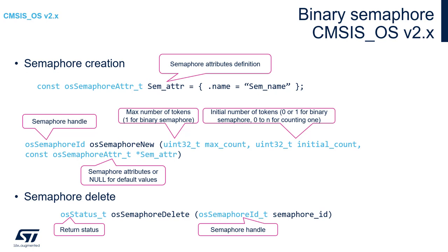The return value of osSemaphoreNew is the handler to the semaphore, which can be used later — for example, to delete it once it is no longer needed, to save memory. To delete the semaphore, we use the function osSemaphoreDelete, specifying the semaphore handler as the argument. We should also monitor the return status: a value of zero means osOK, so the removal was successful. Those are the main two functions to create and delete the binary semaphore.